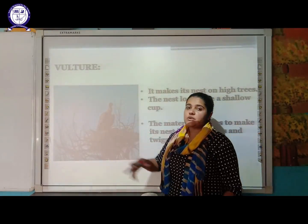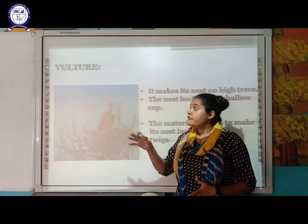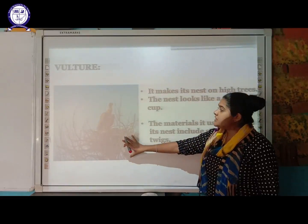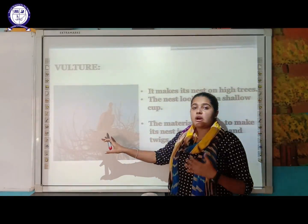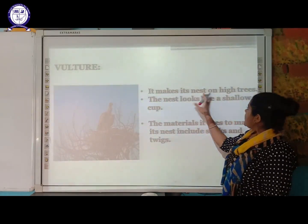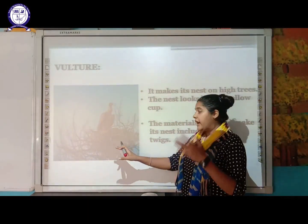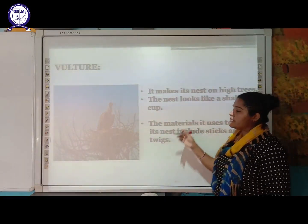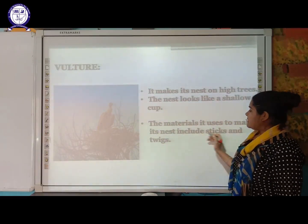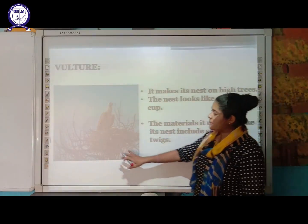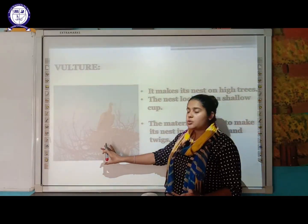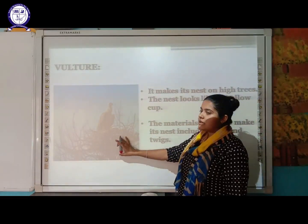Vultures make their nests on very high trees. The nest looks like a shallow cup. The materials used to make the nest include sticks and twigs, as you can see in the diagram.